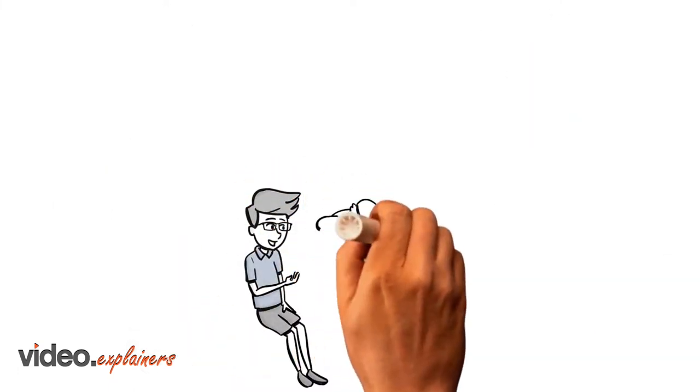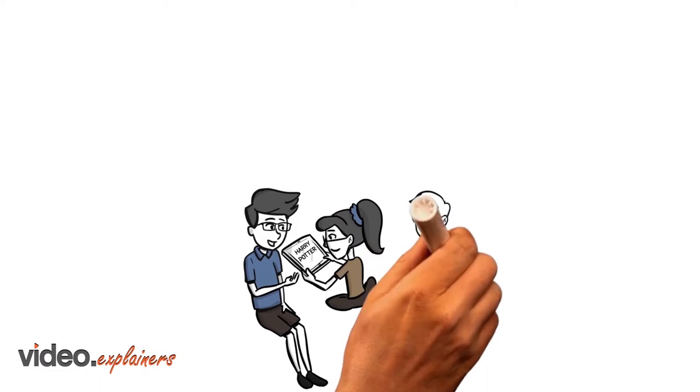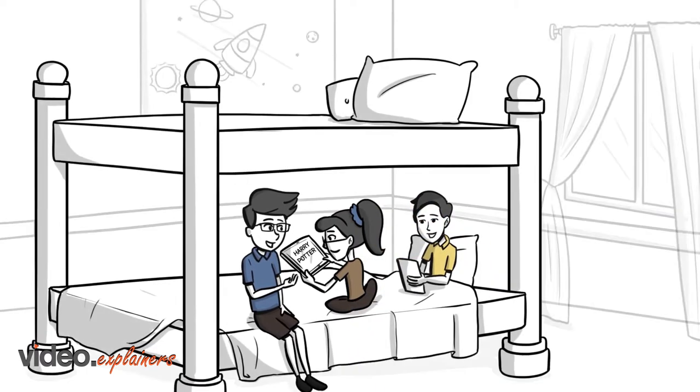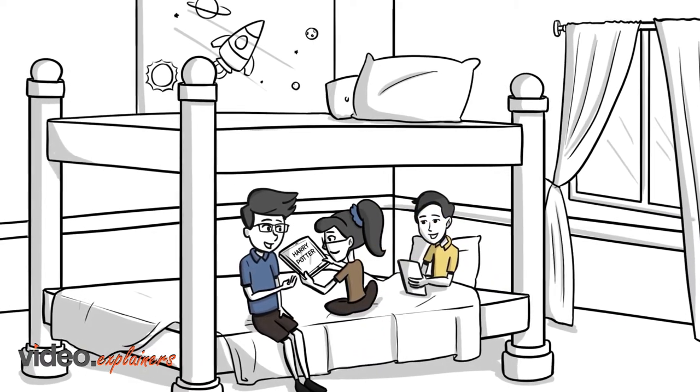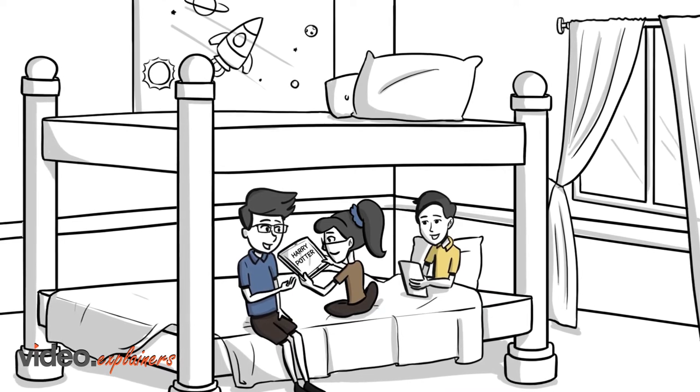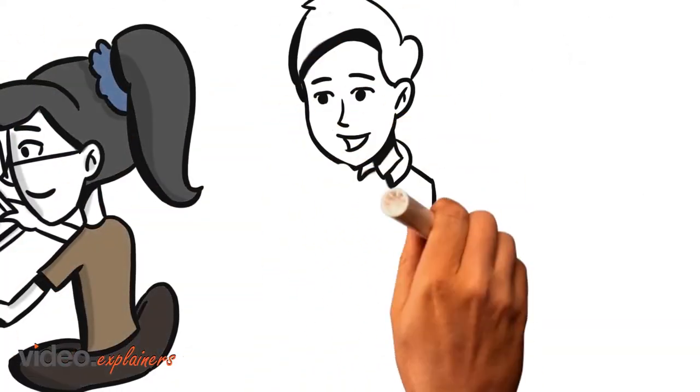In the Princeton study, a computer, not the parent, read to the child. The researchers wanted to know if a computer could be used when a parent is not available. They tested it with children at a summer camp who did not like to read.